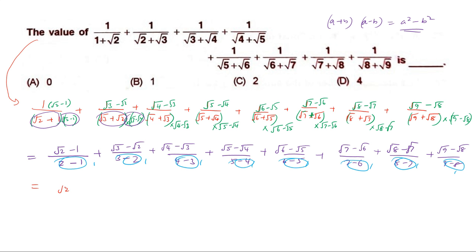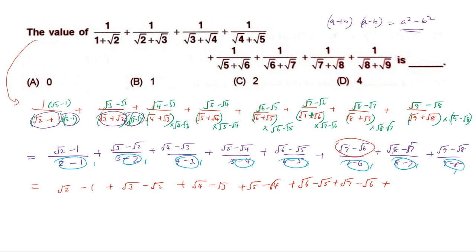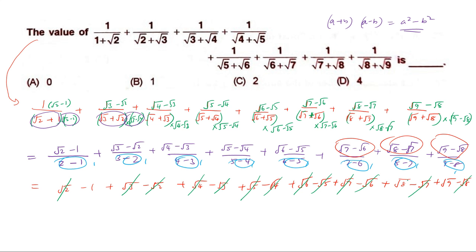Since all denominators are 1, we can write the numerators directly: (√2−1) + (√3−√2) + (√4−√3) + (√5−√4) + (√6−√5) + (√7−√6) + (√8−√7) + (√9−√8). Now we cancel terms: −√2 and +√2 cancel, −√3 and +√3 cancel, −√4 and +√4 cancel, −√5 and +√5 cancel, −√6 and +√6 cancel, −√7 and +√7 cancel, and −√8 and +√8 cancel.